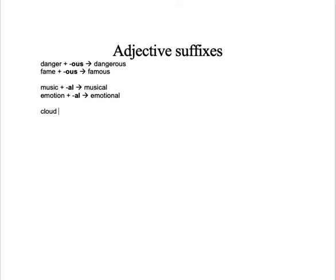The next suffix is '-y'. For example, 'cloud' — you add '-y' so that you can get 'cloudy'. Or the typical one: 'dirt', which is 'suciedad', and you add '-y' so that you have 'dirty'. As you can see, just a single letter can also be a suffix.